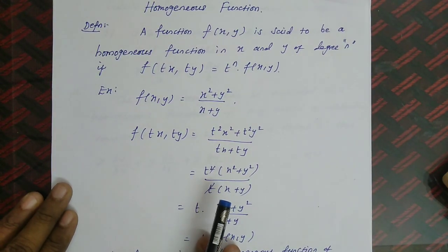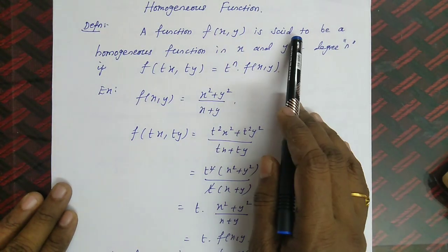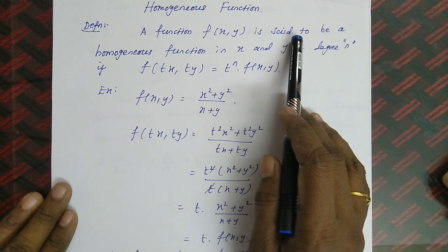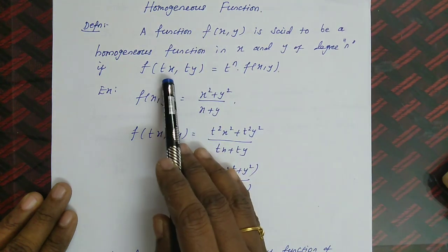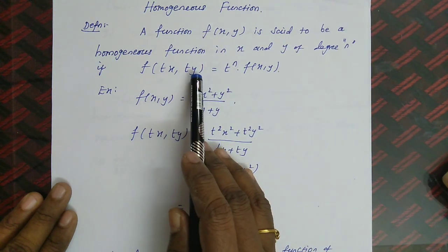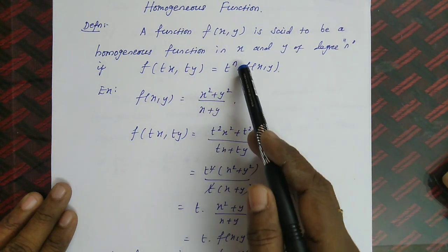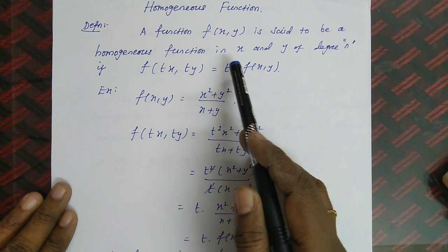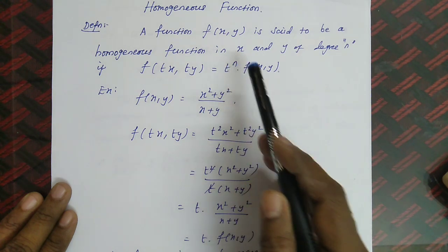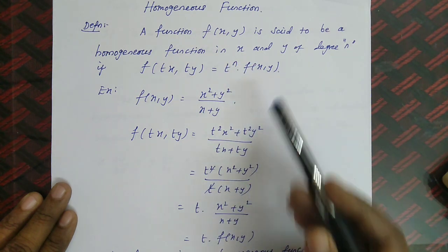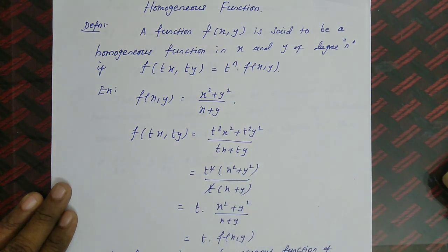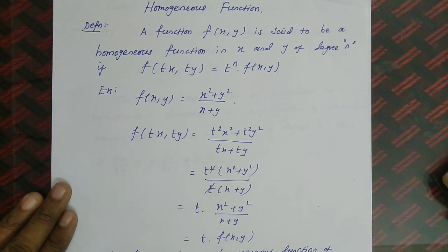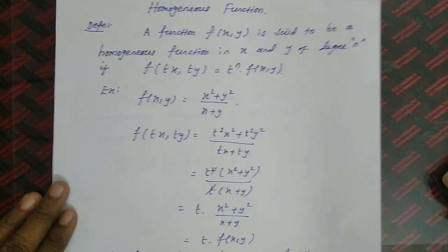To summarize: a function is homogeneous if, when replacing x and y with tx and ty respectively, the result comes out as t^n · f(x, y) for some number n.